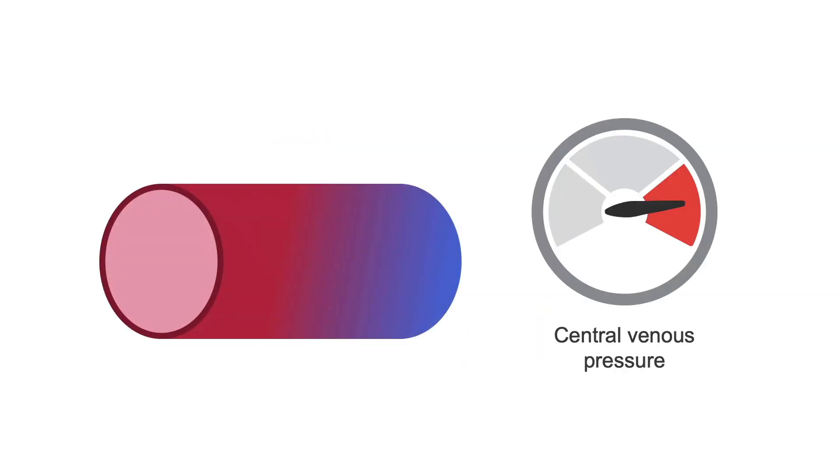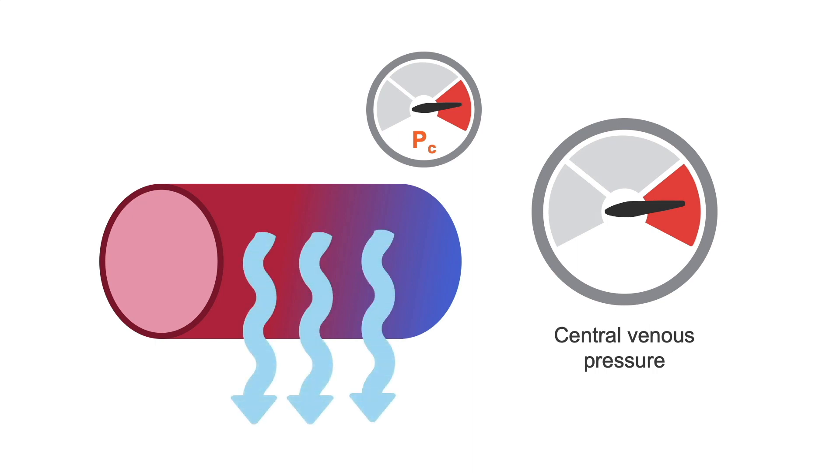However, with an elevated central venous pressure, the pressure on the venous end remains elevated. Therefore, pressures in the capillary remain higher for longer, leading to a net increase in fluid moving out of the capillary.